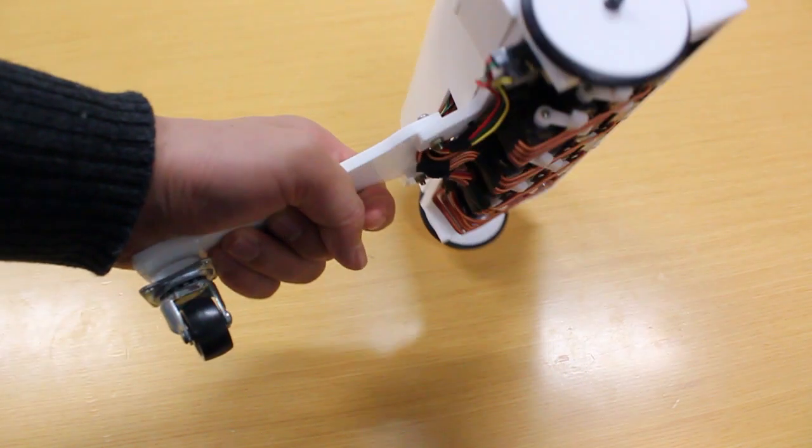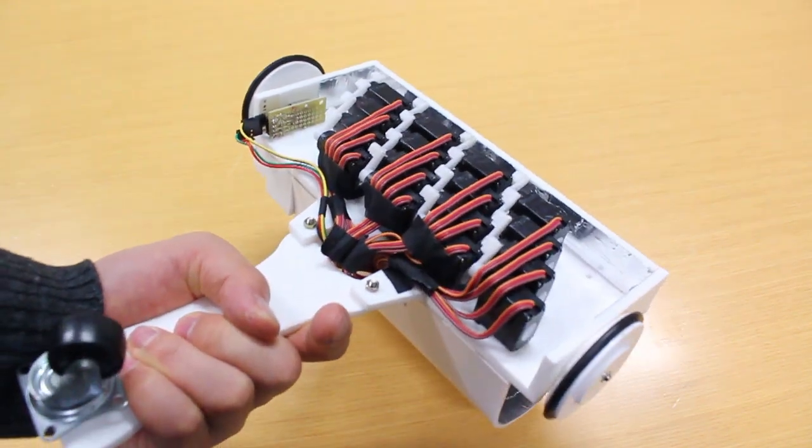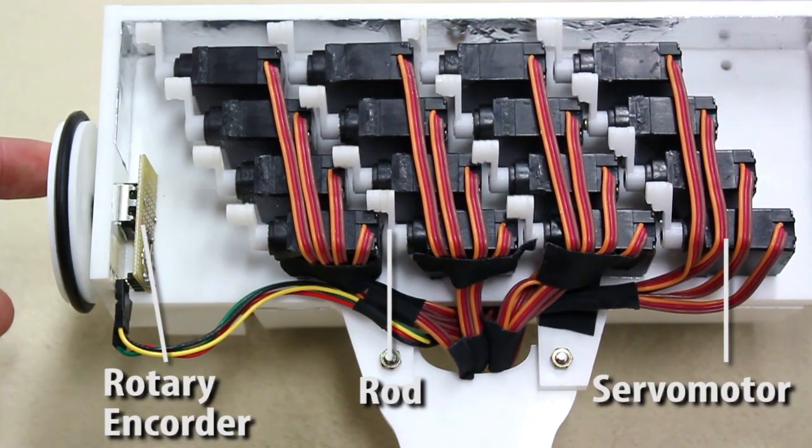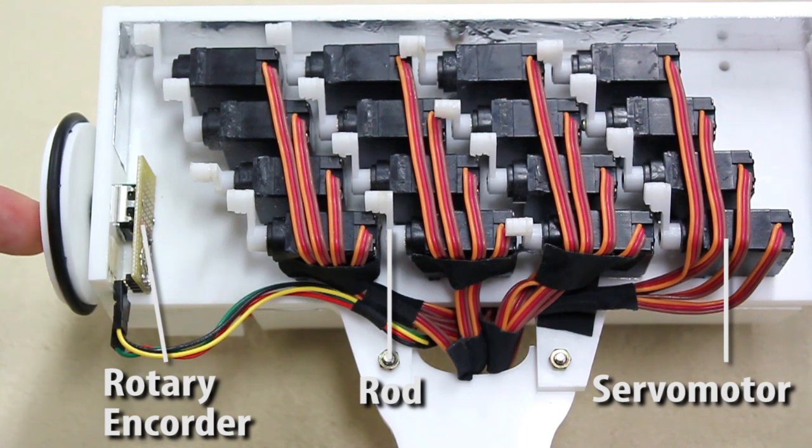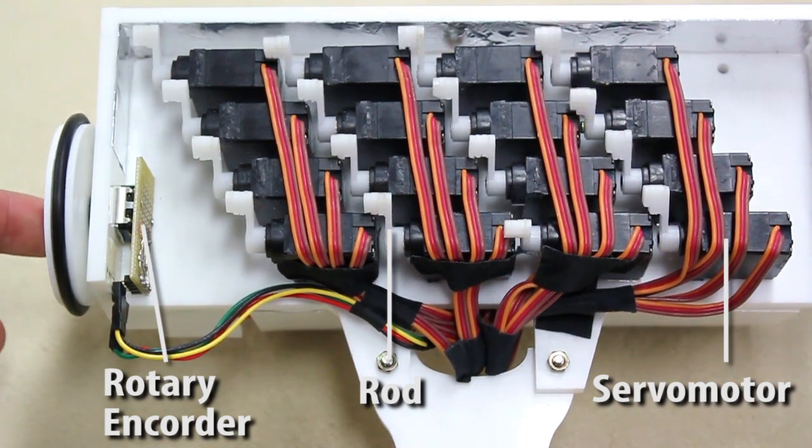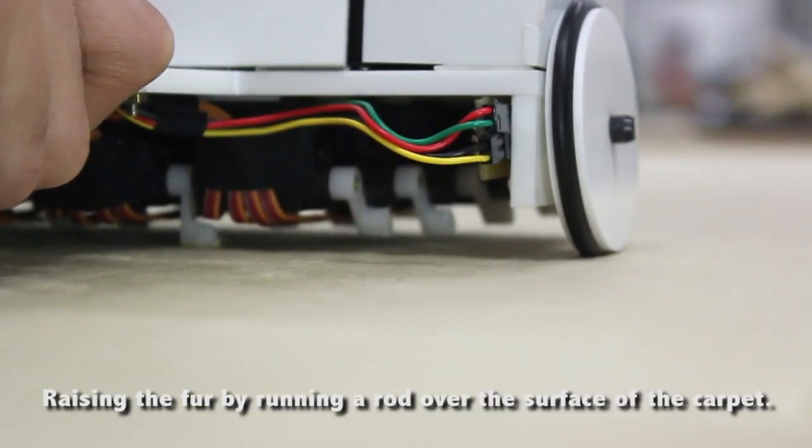We will first describe the roller type device. The roller type device consists of a rotary encoder and 16 servo motors fixed with rods. The servo motors and rods raise the fur surface.